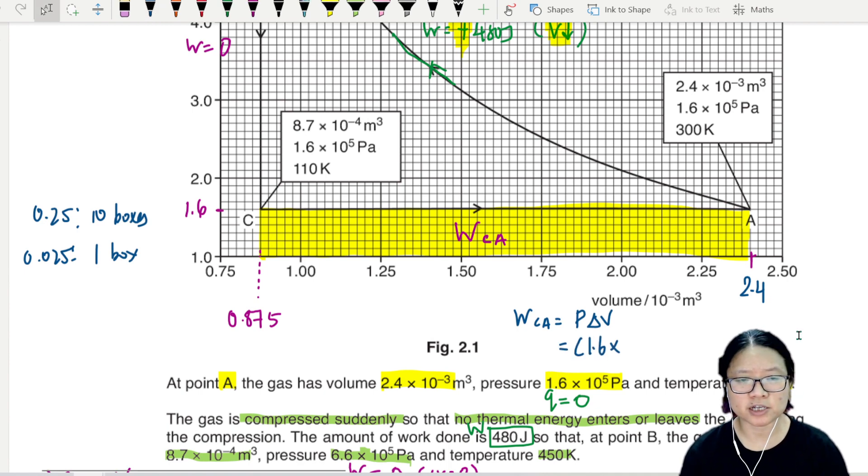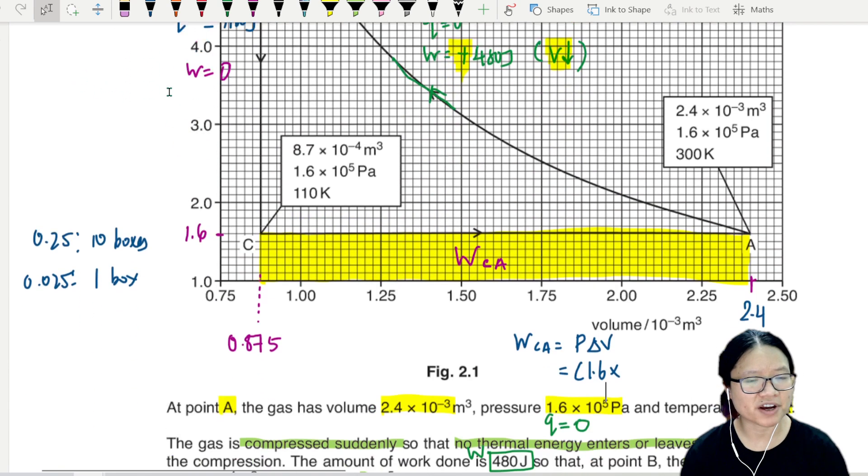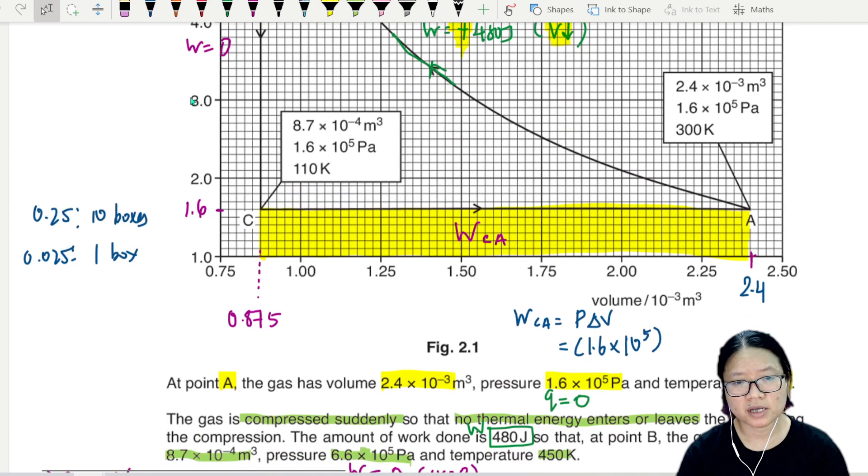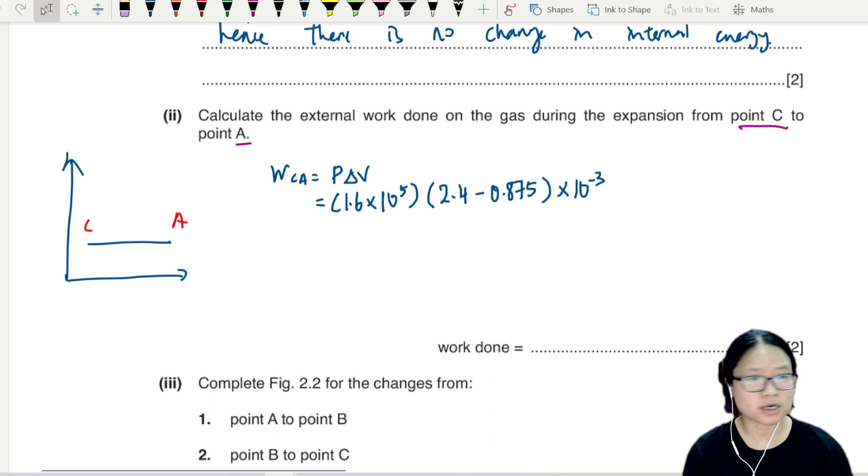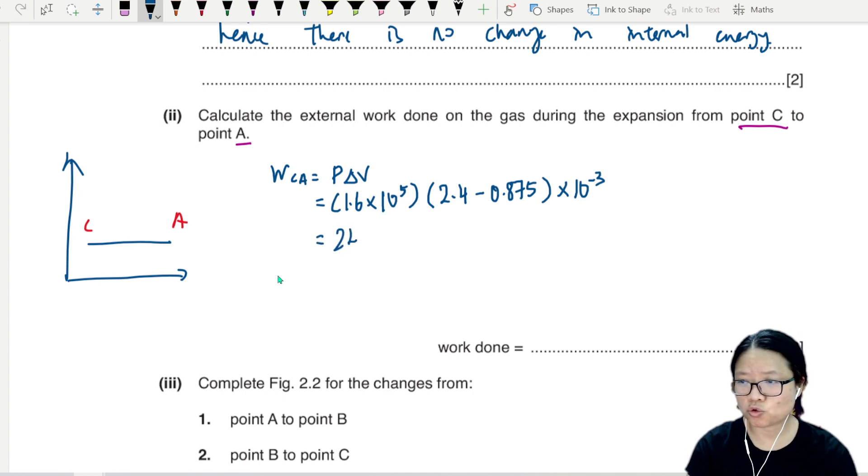To find the work done from C to A, I will take p times change in volume. Pressure is 1.6, don't forget there's always a prefix hiding in the label, times 10 to the power of 5. And the change in volume will be 2.4 minus 0.875 times 10 to the power of negative 3. Do not forget that there's also another prefix here. And then you can press your calculator.